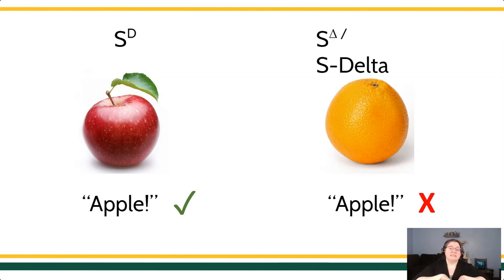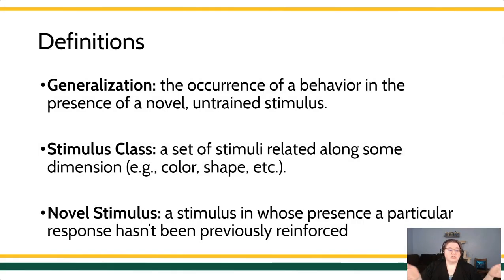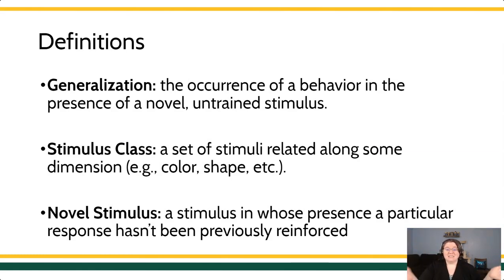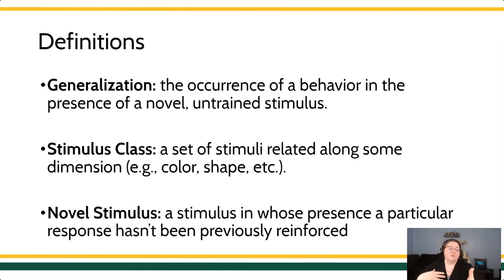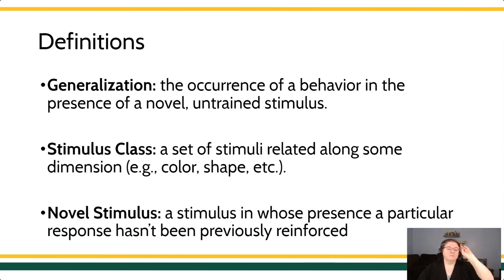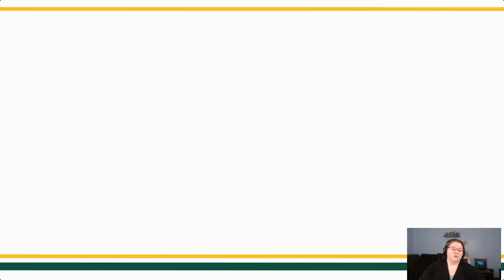Generalization, however, is exactly the opposite. The point of generalization is that the behavior is reinforced when it occurs in the presence of lots of stimuli. We see generalization as a phenomenon that takes place when a behavior trained under certain circumstances occurs in a novel or new circumstance. We also have to understand what a stimulus class is — stimuli that are related along some dimension, like color, shape, or some quality they have in common. A novel stimulus is a new stimulus, something our learner has never seen before.